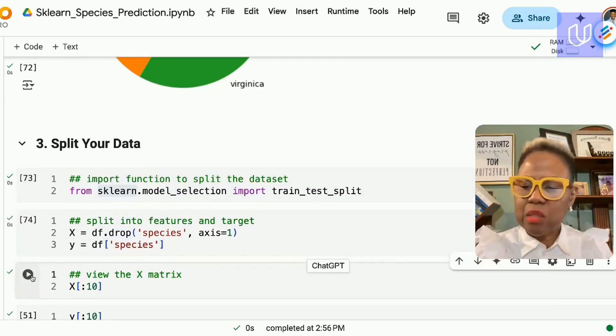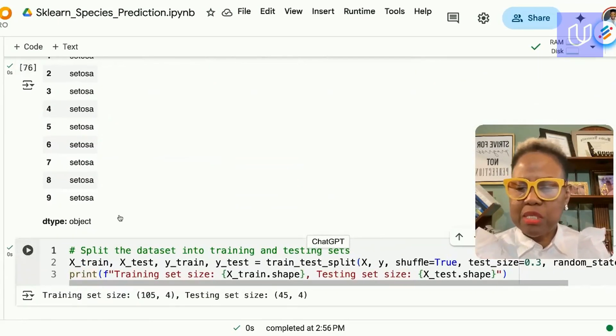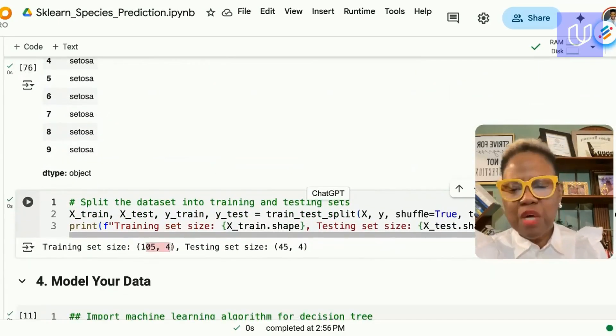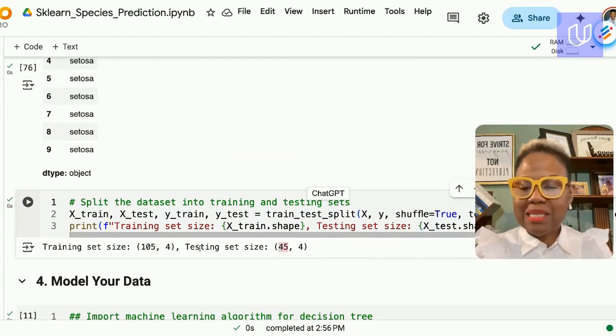Now we have our x and y we can see both matrices. Now we can do our train test split. Here 105 rows have been assigned to the training set while 45 rows have been assigned to the testing set.